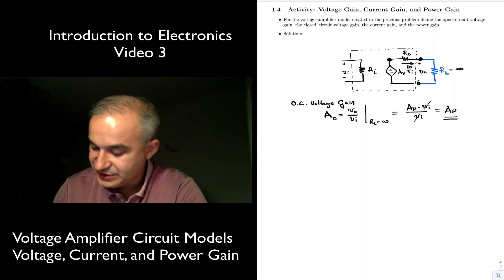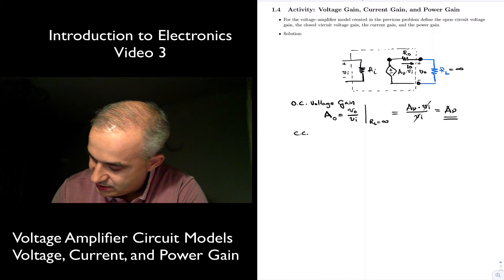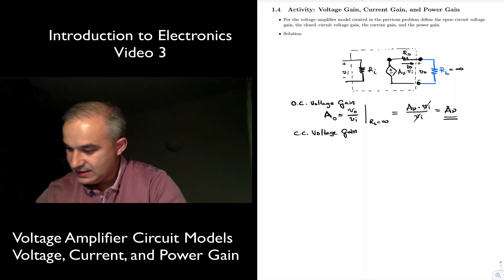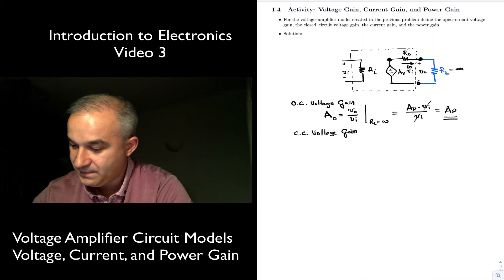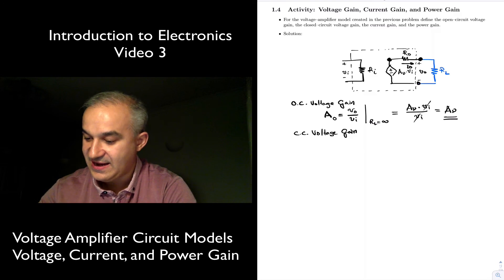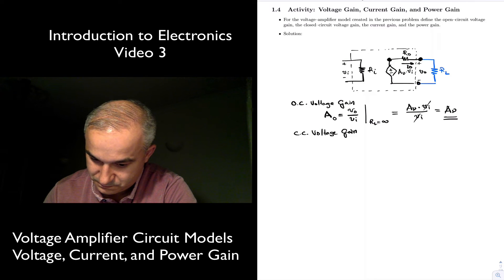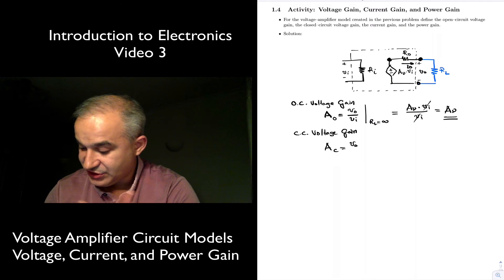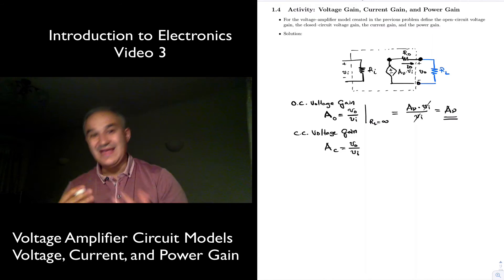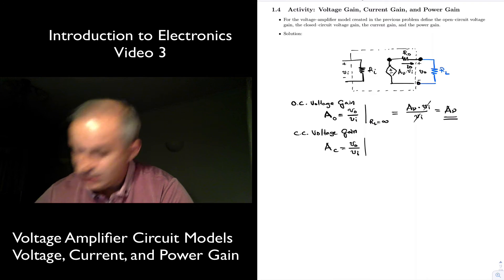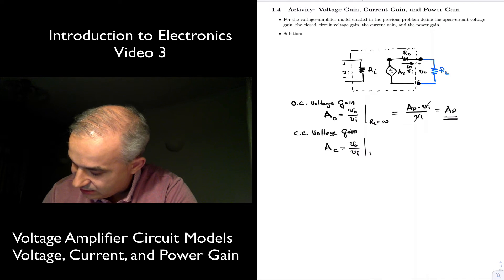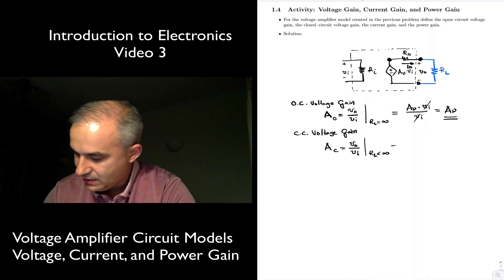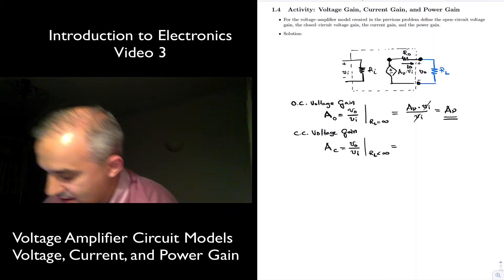Now let's do this under closed circuit conditions. What happens if RL is no longer infinity, but RL is actually finite? So we are going to say AC is the gain — output voltage over input voltage. Gain is always going to be a ratio. Under closed circuit conditions, RL is not infinity; it is going to be finite. Therefore we do not have an open circuit. So let's calculate it.